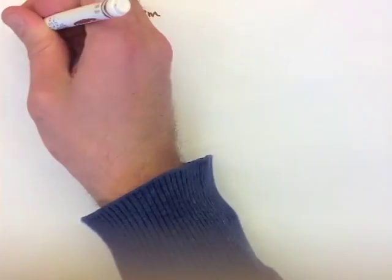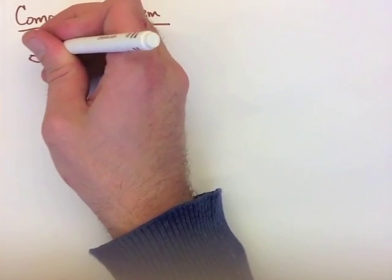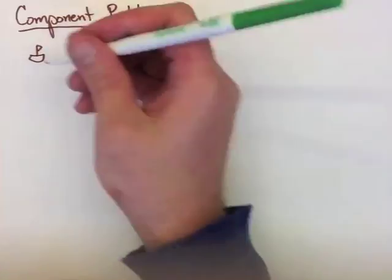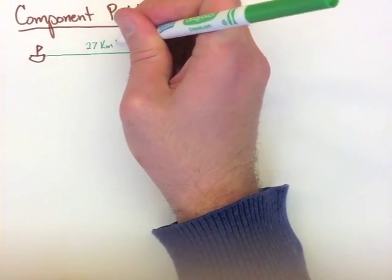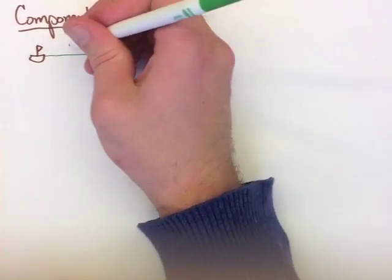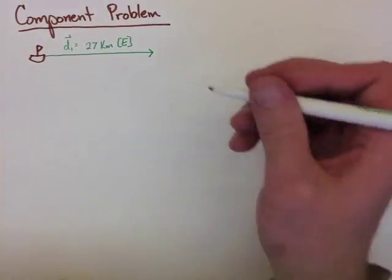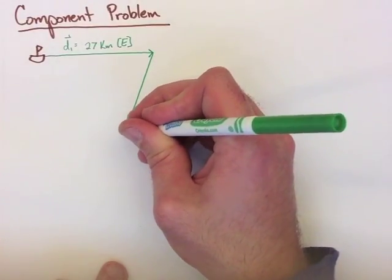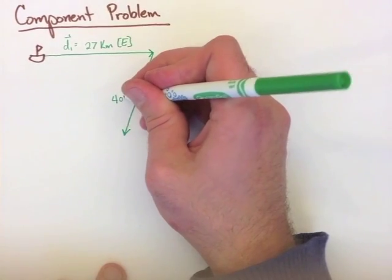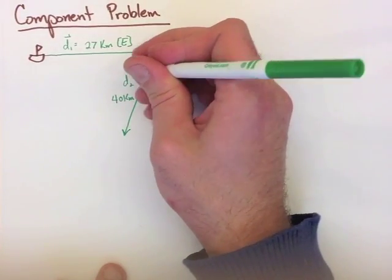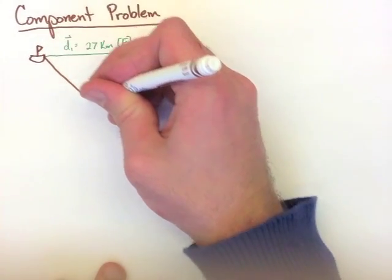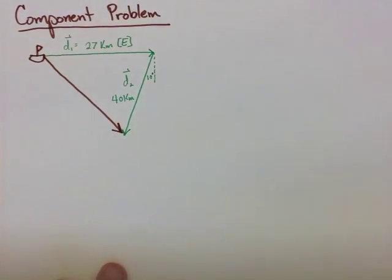Now when we're setting up a component problem, like the one in our note, we have to set up each vector to look as though it's an x and a y, even if one of the values is 0. So we're going to draw our diagram and label our first vector to be D1, and our second vector will be D2. Now both of these vectors have to have both an x component and a y component, even if one of the values is 0.